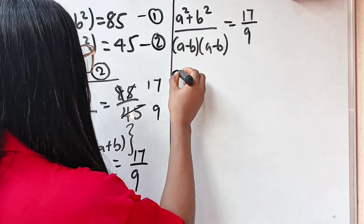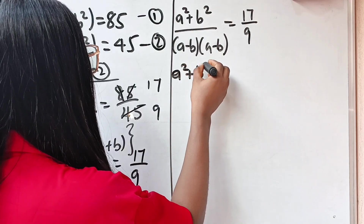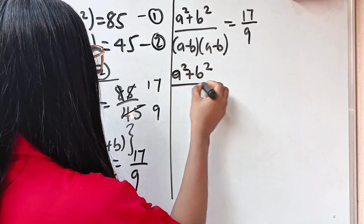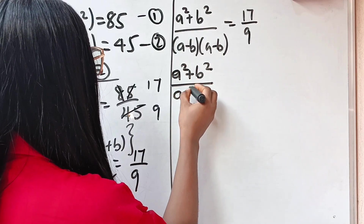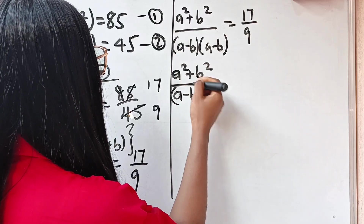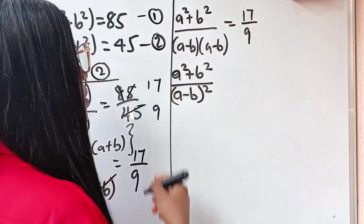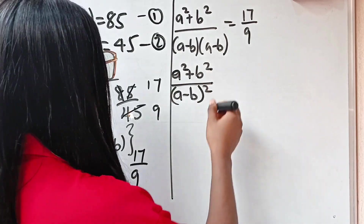So this is a squared plus b squared divided by a minus b squared — because this times this is a minus b squared — is equal to 17 divided by nine.